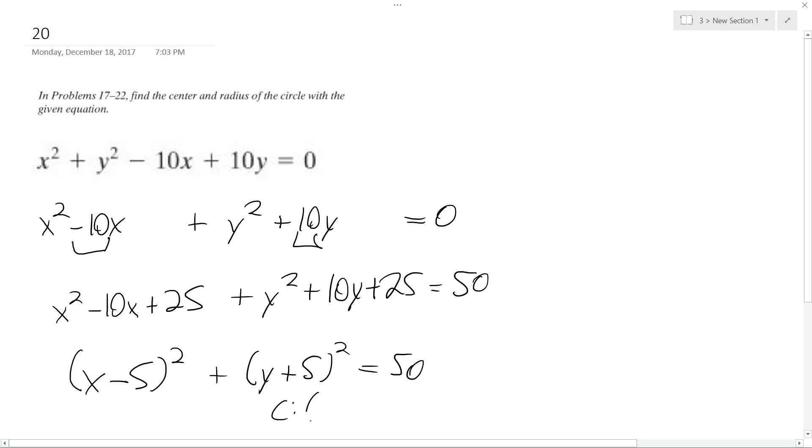So the center is going to be 5 comma negative 5, and the radius is the square root of 50, or excuse me, square root of 50, which broken down can become 5 root 2.